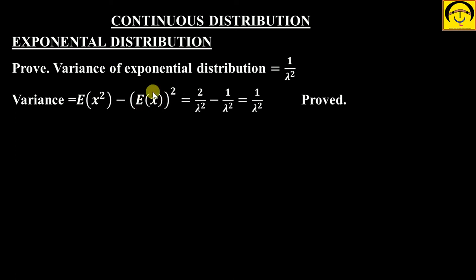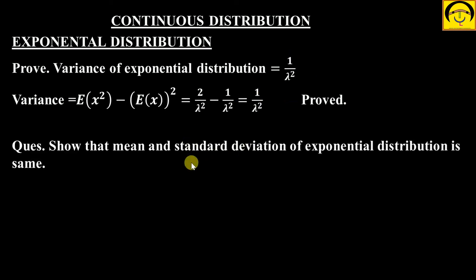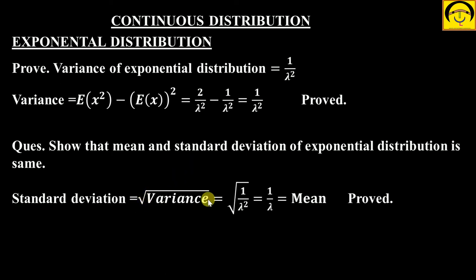Variance kya hota hai: E(x²) − [E(x)]². E(x²) abhi aapka nikla hai 2/λ². E(x) mean aap nikal chuke ho 1/λ, aur uska square means 1/λ². So 2/λ² − 1/λ² = 1/λ². Aapka variance proof ho gaya. Standard deviation kya hota hai? It is square root of variance. Variance kya hai: 1/λ², so it becomes 1/λ. So your 1/λ is also the mean. So mean and standard deviation is the same in case of exponential distribution.